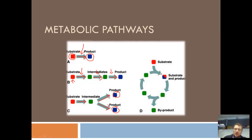Or they can be cyclical metabolic pathways, where you start off at a point, convert it into one form of the intermediate, into another one, into another one. Often a byproduct is formed — for example, maybe carbon dioxide or water or something like that — and then it continues in a cycle, basically repeating over and over again, making lots and lots of the product.